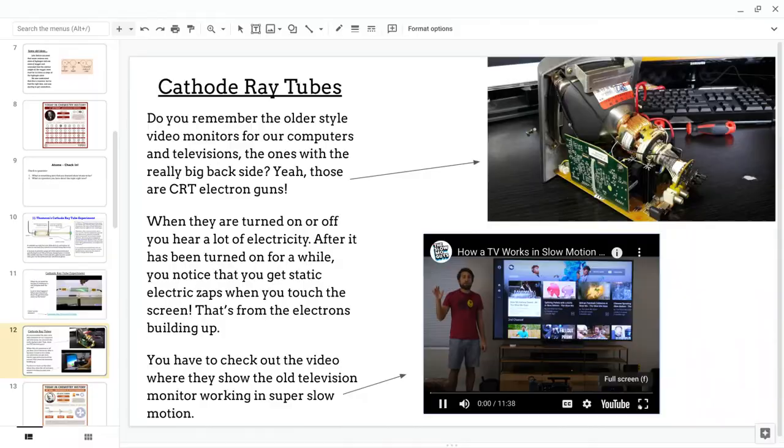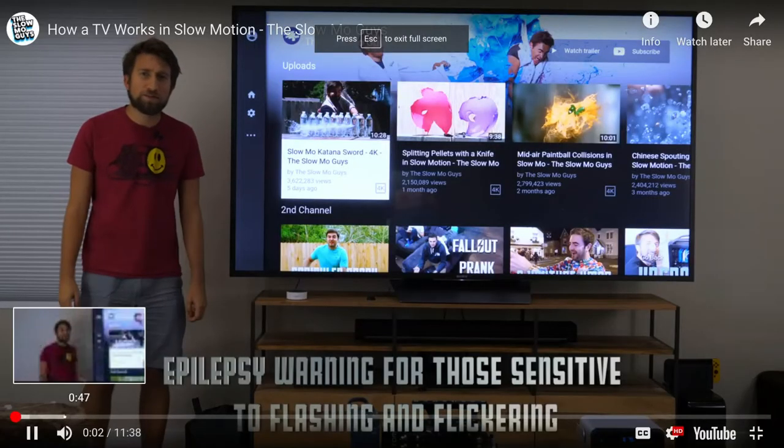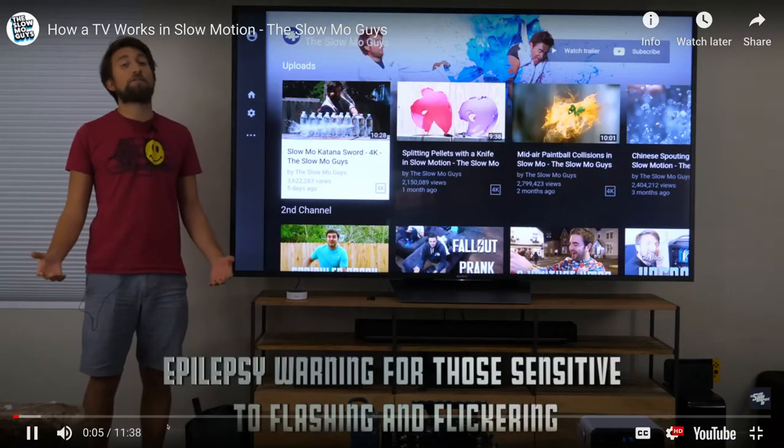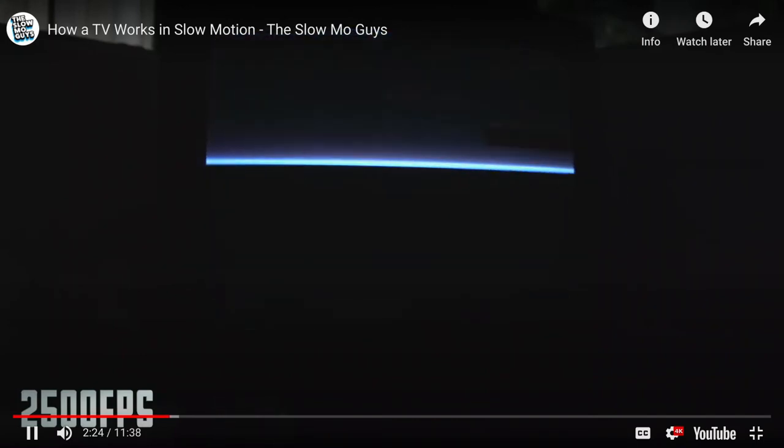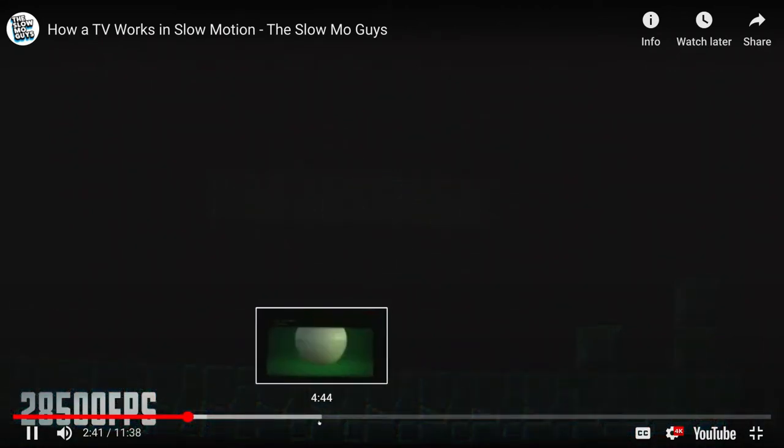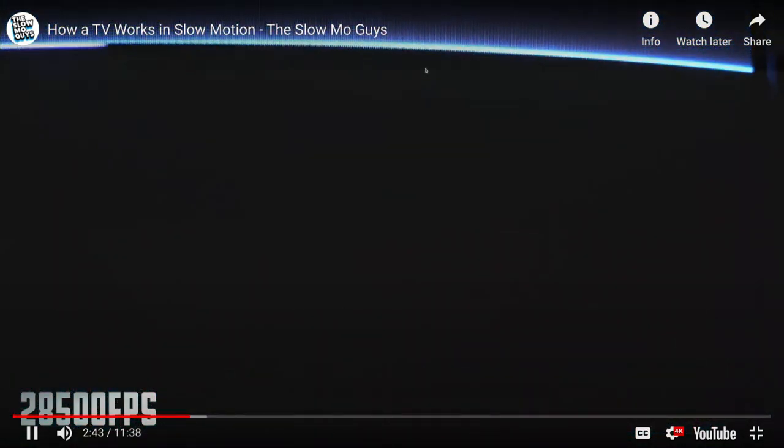But this is a really cool video that shows in extremely slow motion, they have a very awesome slow-mo camera. And it actually shows the beam of electrons hitting the front of the screen. If you watch it in slow motion, you can actually see the electrons hitting the screen one layer at a time. It happens so fast that we're just playing a video game or watching TV and we just don't notice this. It happens so quickly.